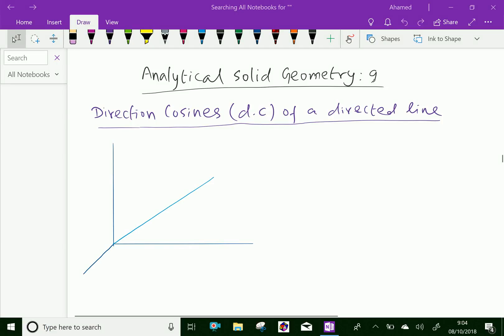Welcome to aminacademy.com. In analytical solid geometry, let us discuss direction cosines, that is DC of a directed line.